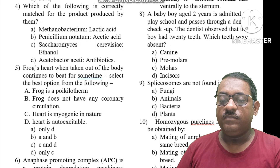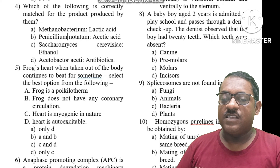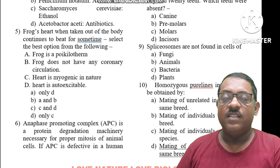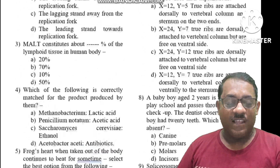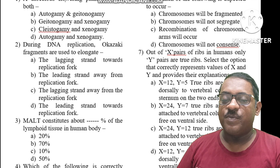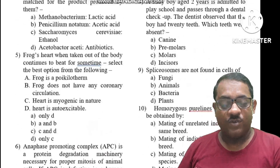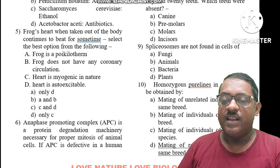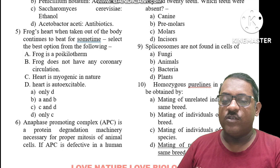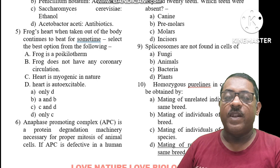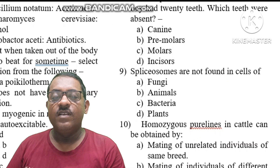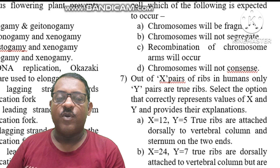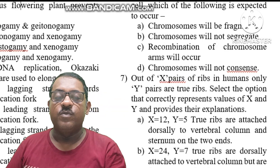Question number 6: The Anaphase Promoting Complex (APC) is a protein degradation machinery necessary for proper mitosis of animal cells. If APC is defective in a human cell, which of the following is expected to occur? Options include: chromosomes will not be fragmented, chromosomes will not segregate, recombination of chromosome arms will not occur, or chromosomes will not condense.